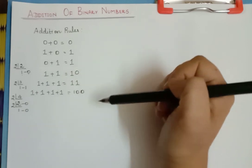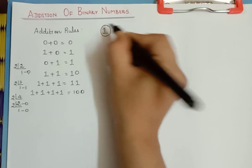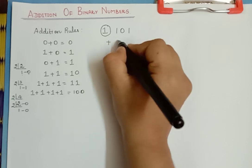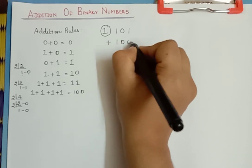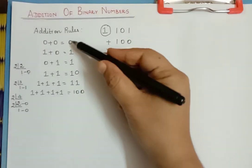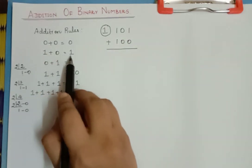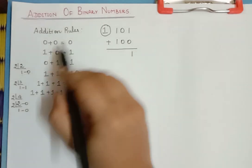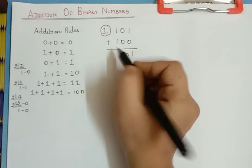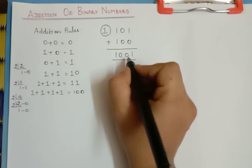Now let us start adding binary numbers. The first question is: add the binary numbers 101 and 100. As per the rules of addition, 1 plus 0 is 1 only. And then 0 plus 0 is 0. And 1 plus 1 is 10. So the result is 1001. This is the answer.